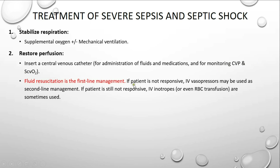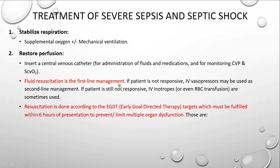After inserting the central venous catheter, we start fluid resuscitation. However, if the patient is still not responsive to fluid resuscitation and signs of end organ dysfunction are still present, we go for IV vasopressors such as phenylephrine and norepinephrine. If that is still not working, a third line would be an IV inotrope such as dobutamine, or even RBC transfusion.